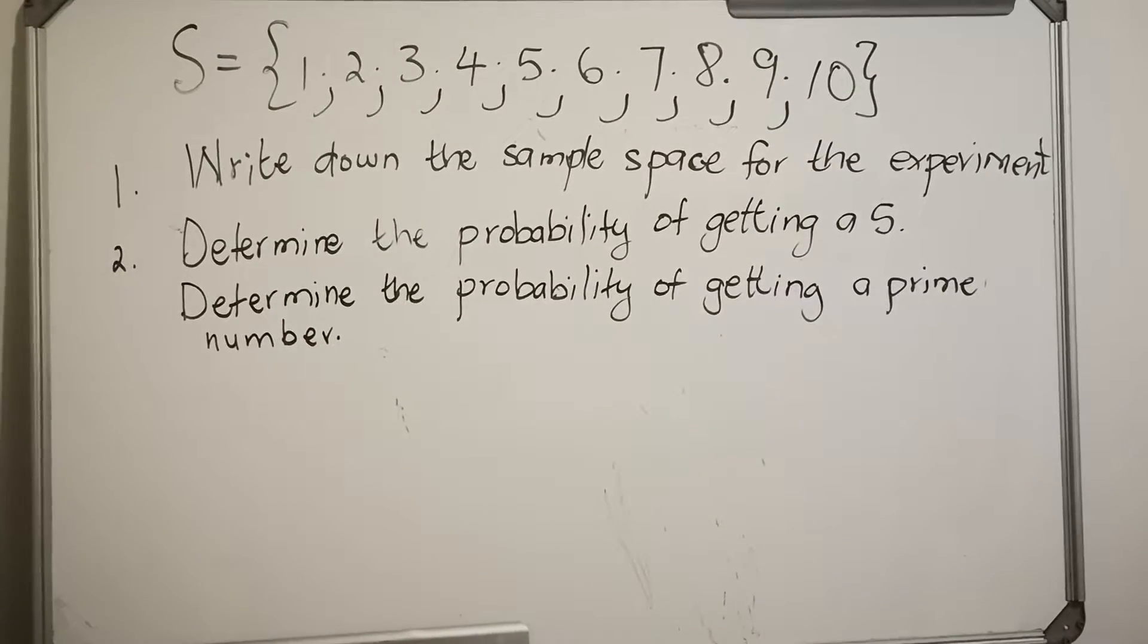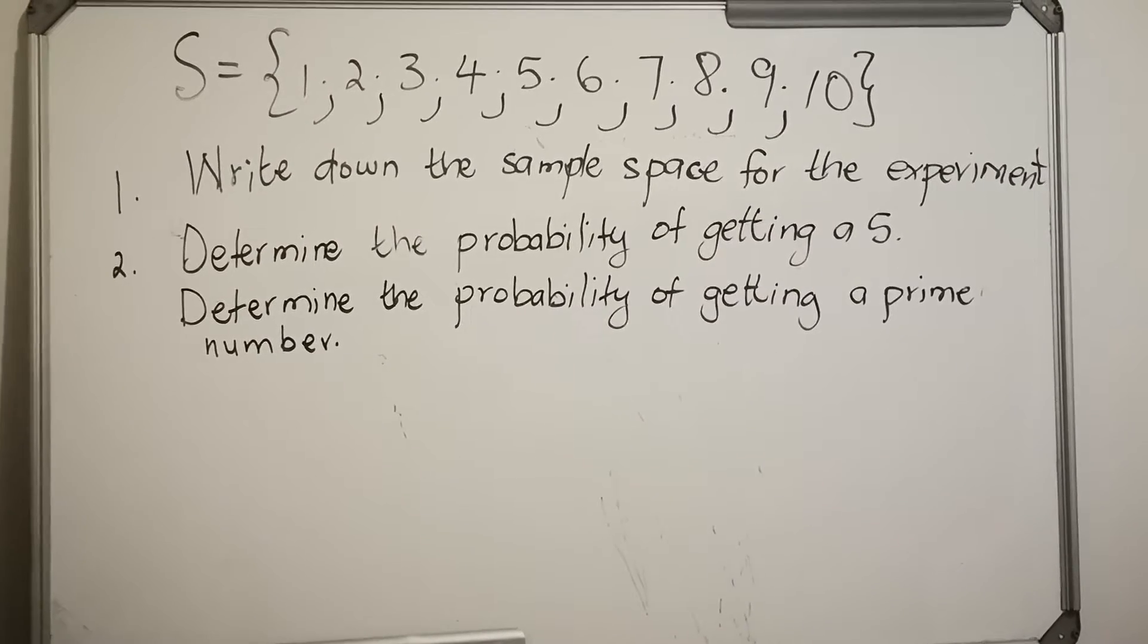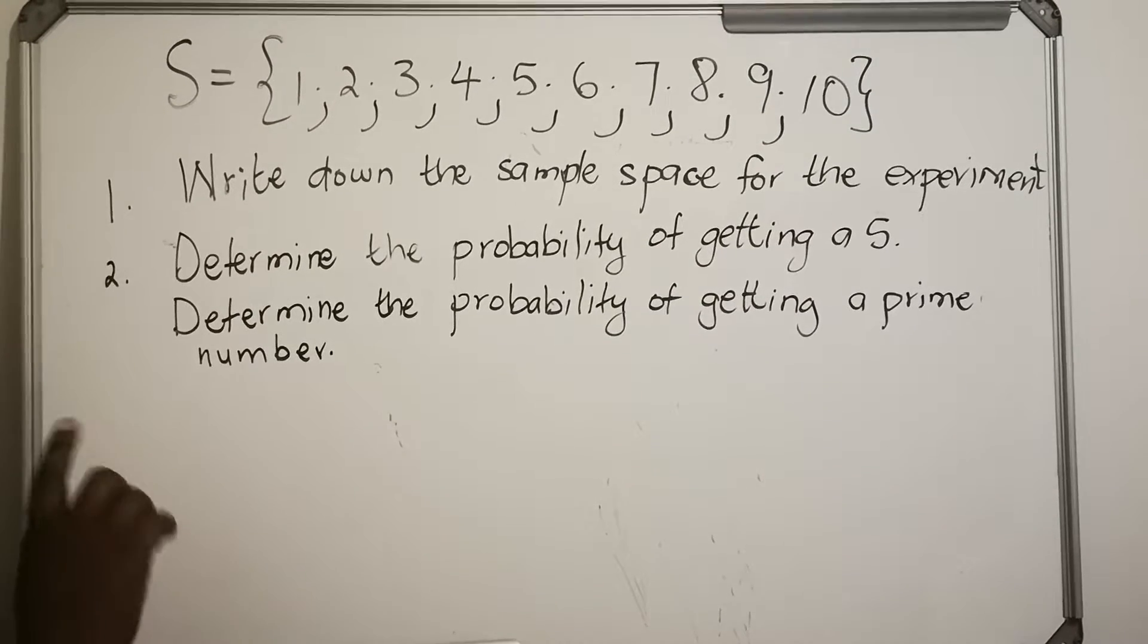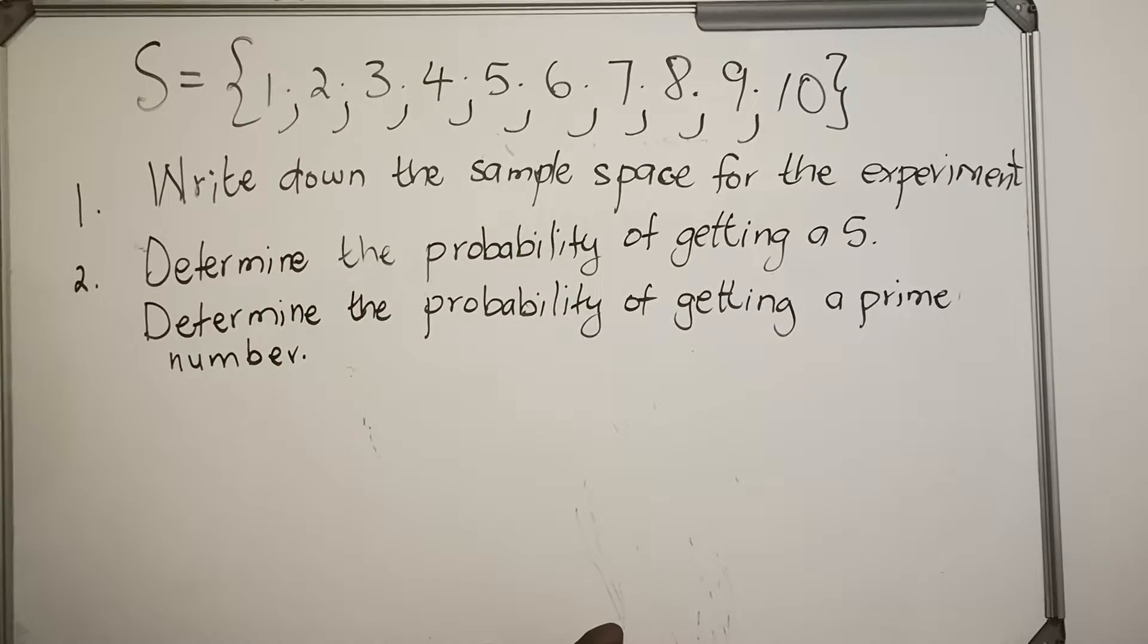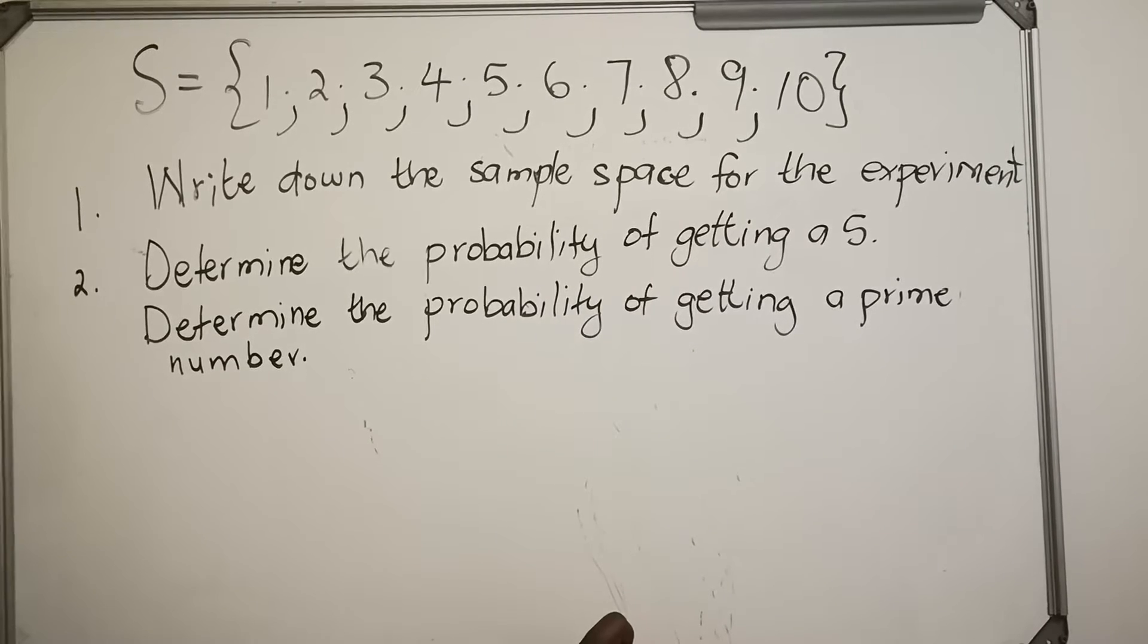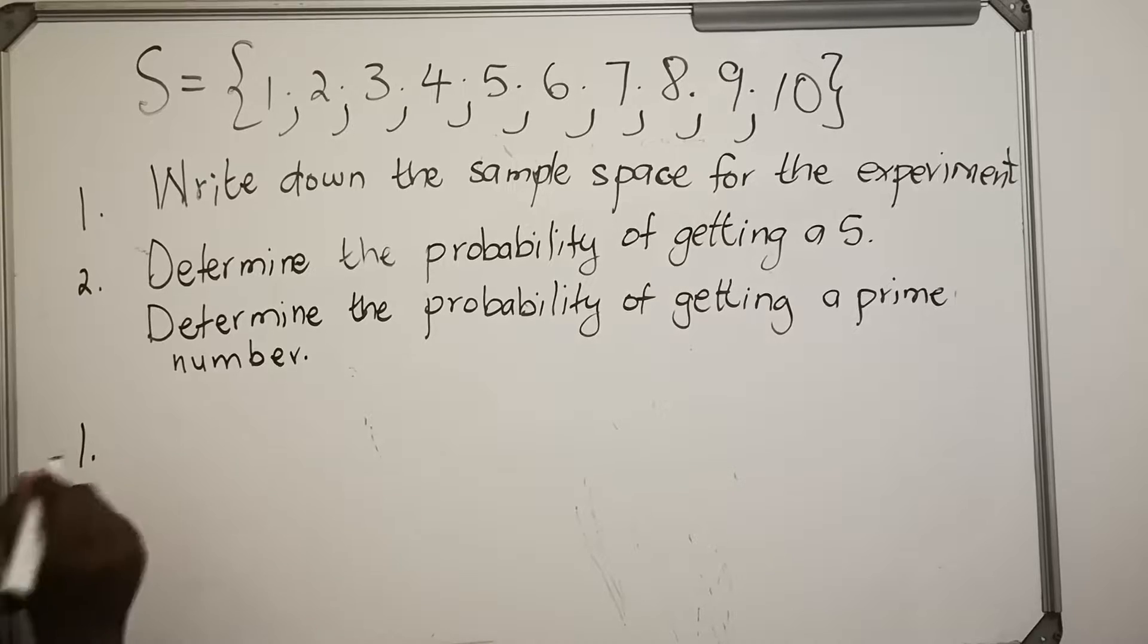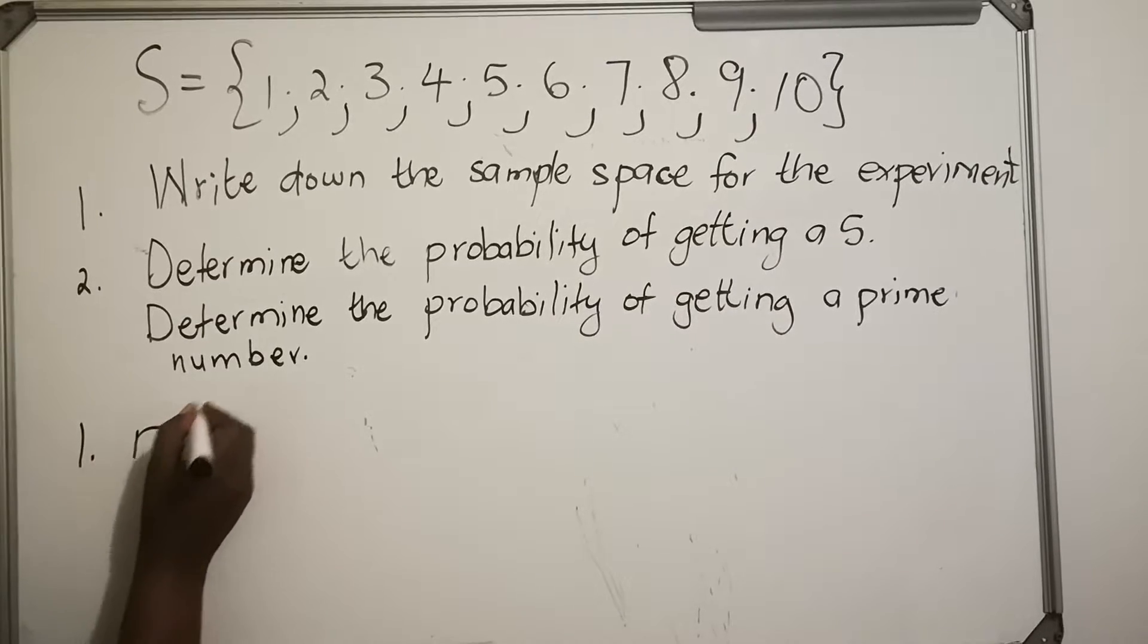Now we look at the example of how we write probability or how we find probability. Here we have a sample space. Our sample space are numbers from 1 up to 10. So if the question says write down the sample space for the experiment, you're going to write n and then the sample space.